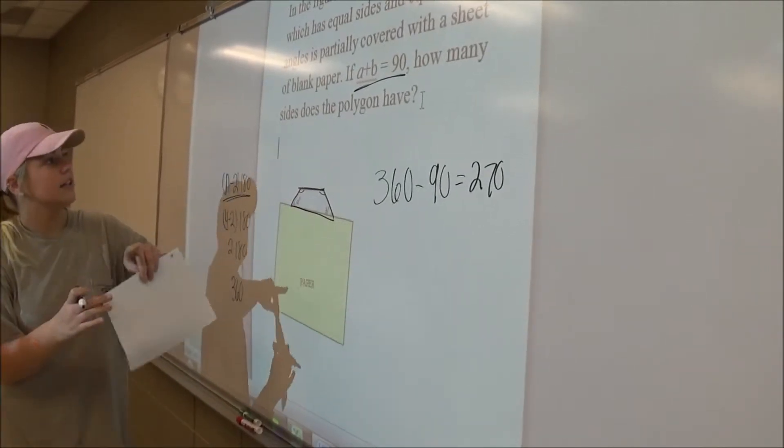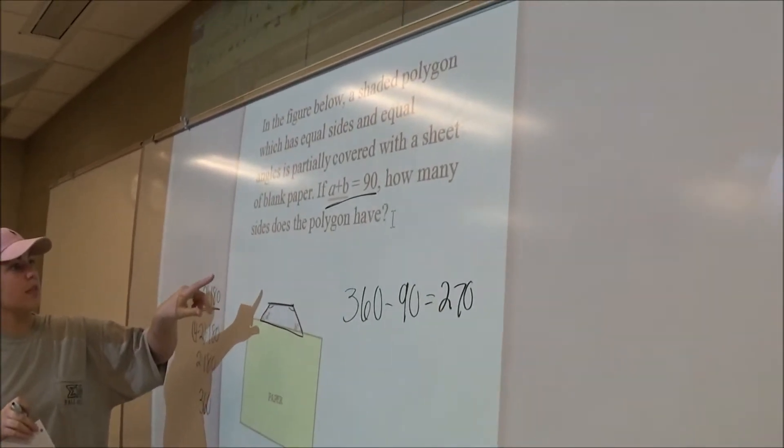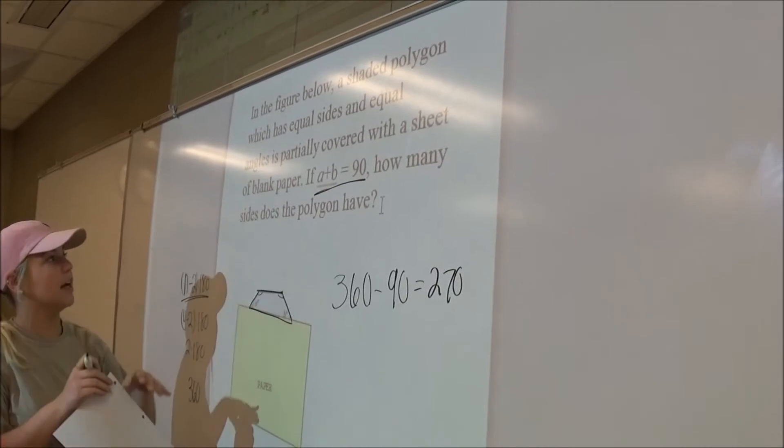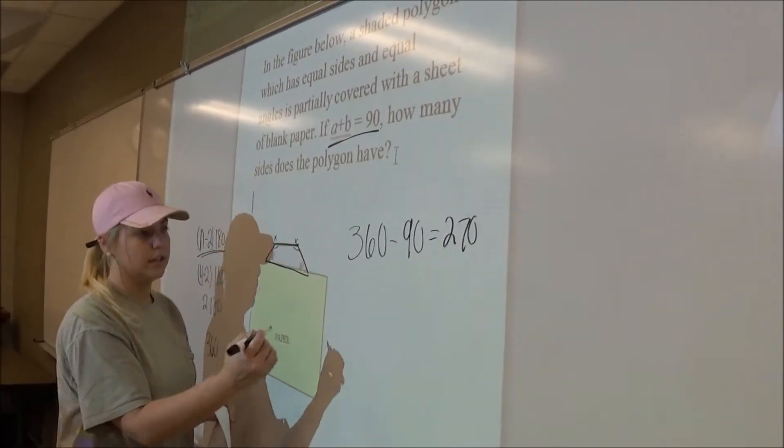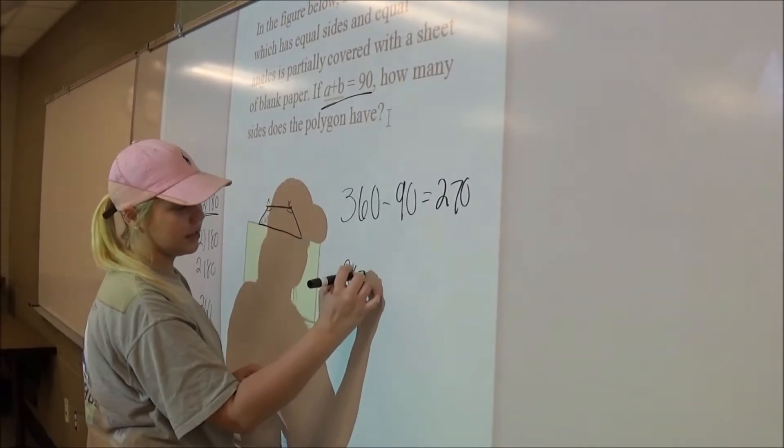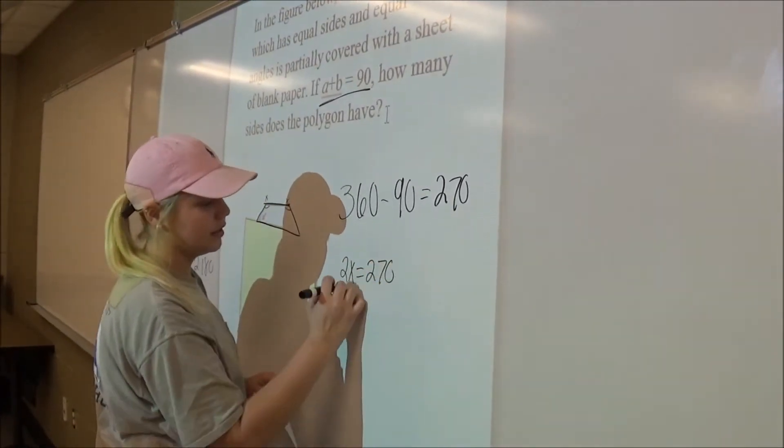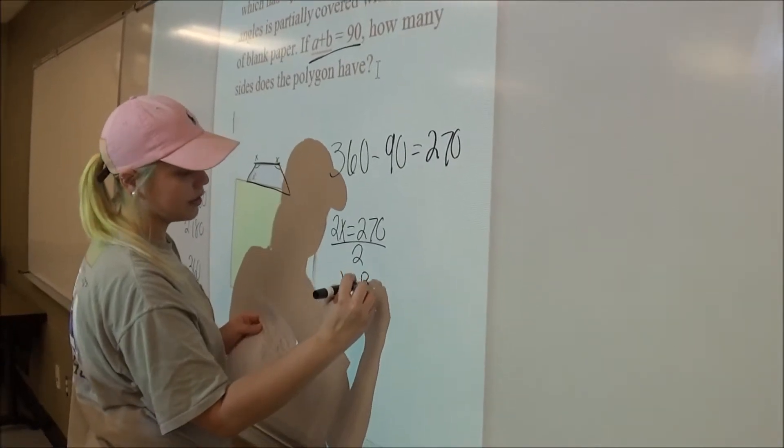So I noted, and it said that there are equal sides and equal angles, so if this is x, then this is x. So I did 2x equals 270 divided by 2, x equals 135.